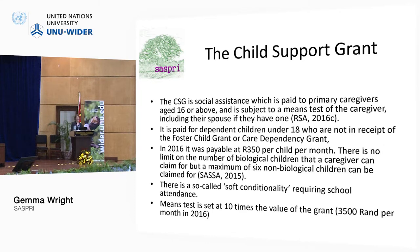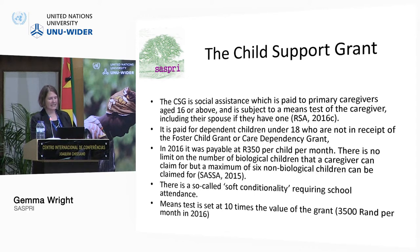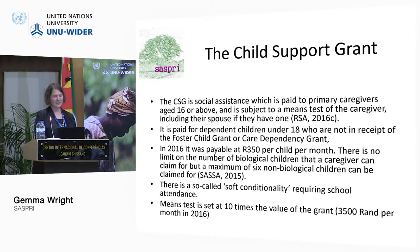The child support grant is a form of social assistance paid to primary caregivers aged 16 and over, subject to a means test of the caregiver and their spouse. It's paid for dependent children under the age of 18 who are not in receipt of either the foster child grant or the care dependency grant. In 2016, it was payable at 350 rand per child per month. There's no limit on the number of biological children who can receive it, but a limit of six for non-biological children. There is a so-called soft conditionality requiring school attendance, and a means test set at 10 times the value of the grant.